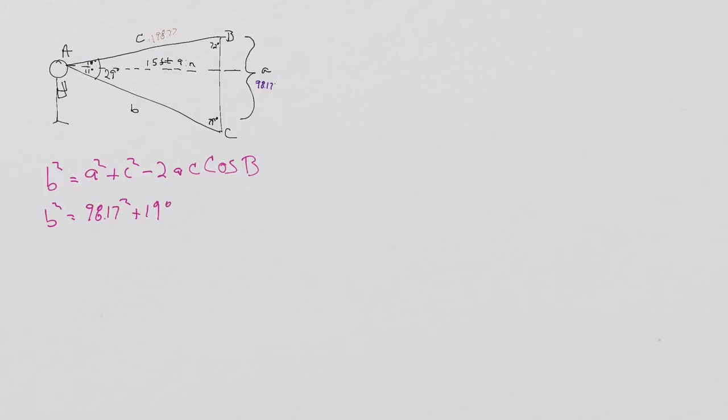.77² - 2 times 98.17, 198.77, cosine of 72 degrees.